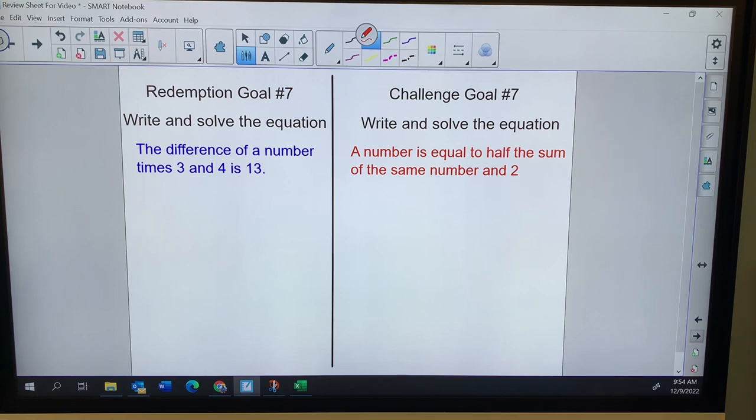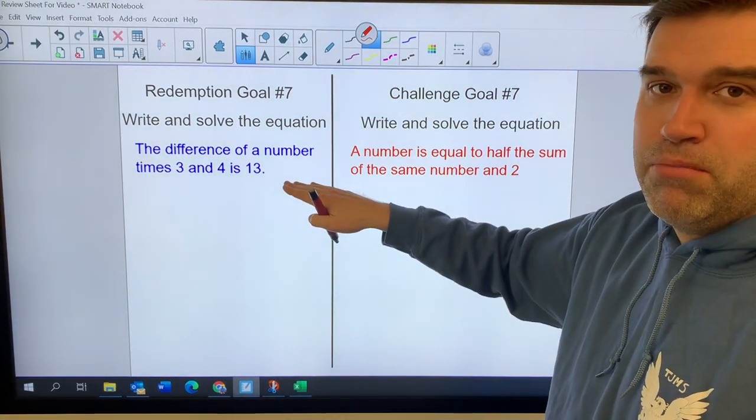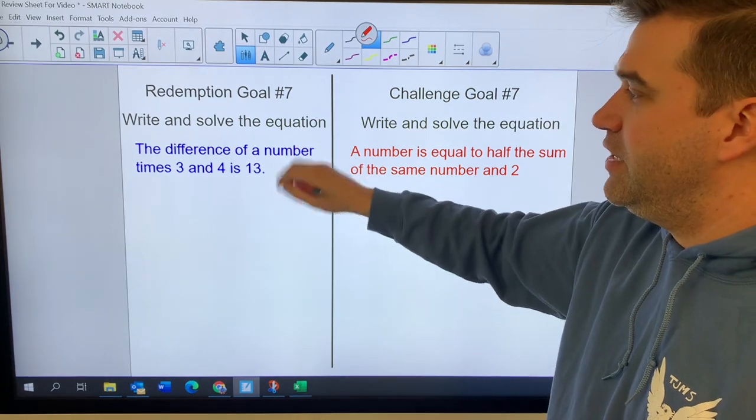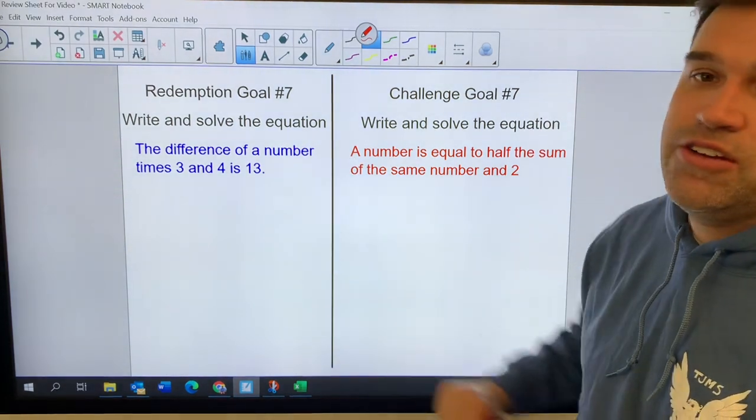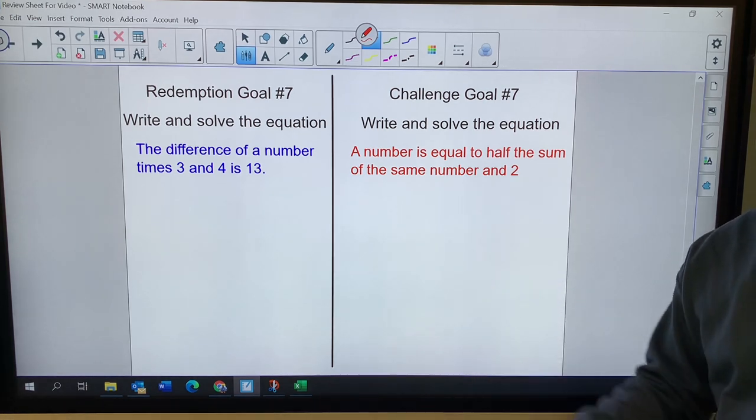We've got a redemption problem where we have a verbal model of an equation. It's given that it's an equation. You've got to write it and solve it. If you're ready for a challenge, I feel like this is pretty easy. Take a look at that challenge. The challenge problem is going to give you variables on both sides.